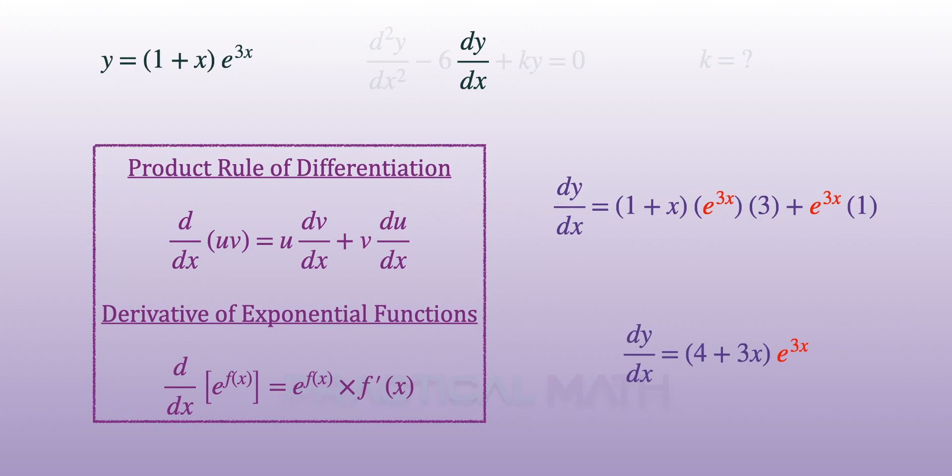By factorization of the common term of e to the power of 3x, we will have our first derivative to be the product of 4 plus 3x and e to the power of 3x.